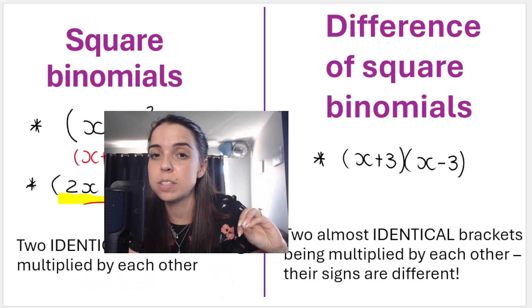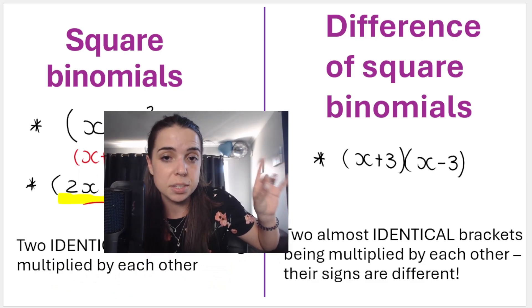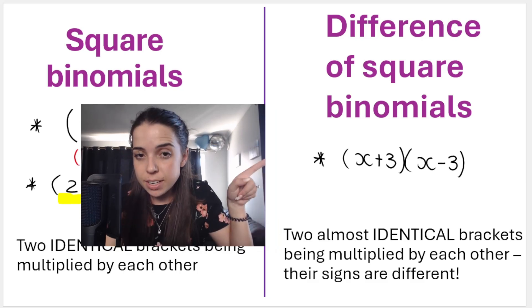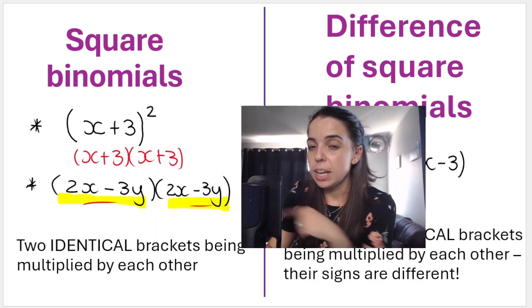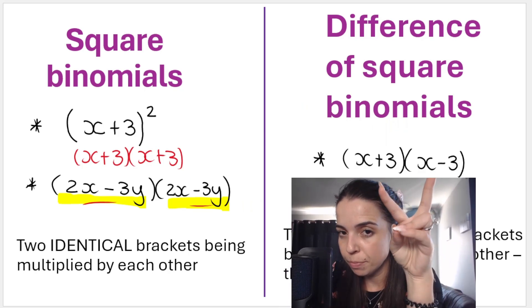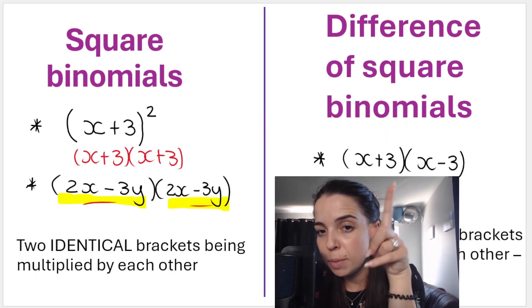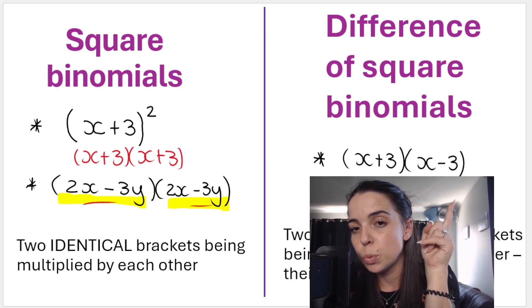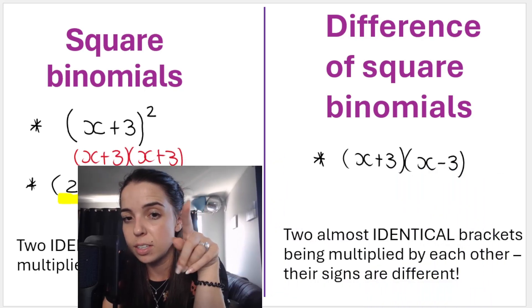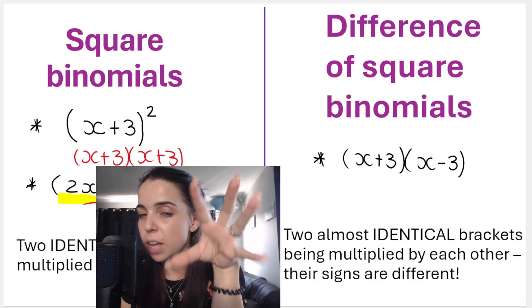But in this video, we're going to be focusing on the difference of squares binomial or the difference between two squares binomials. What makes this different from this is that the difference of square binomials, these binomials are almost the same. Look at them. However, what's different between them is this one has a plus in between, and this one has a minus in between. So almost identical, but they have opposite signs and they're being multiplied by each other. Signs are different.